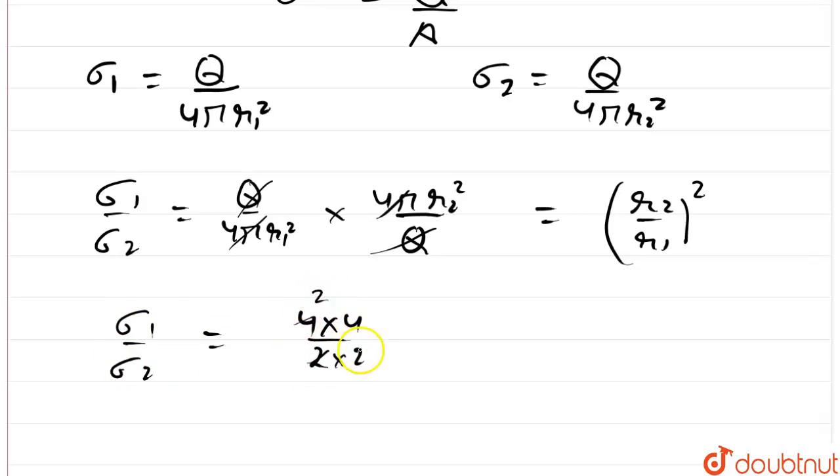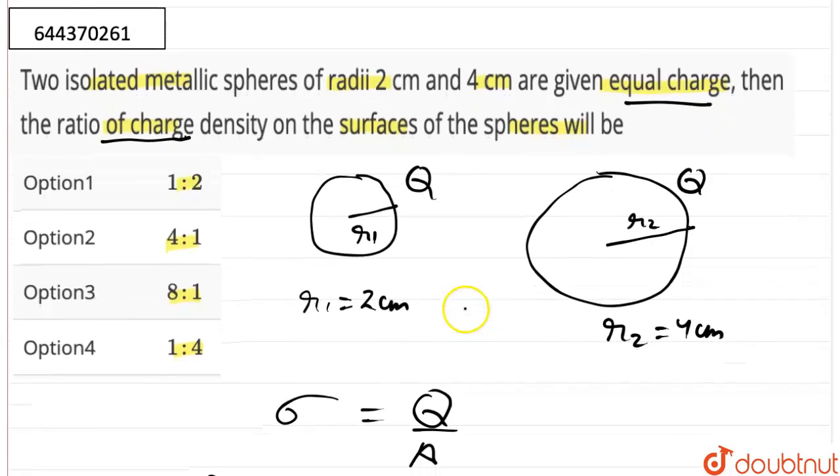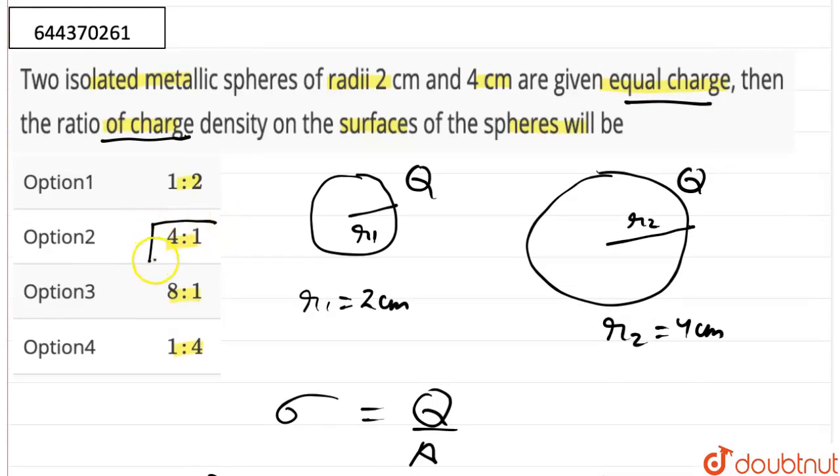The charge density, the ratio of the charge density sigma 1:sigma 2 would be 4:1. Now option 2 would be the correct answer. Thank you.